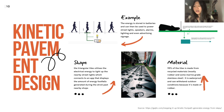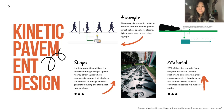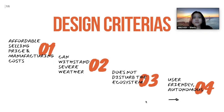Simply put, the tiles have flywheels beneath them that spin when walked on, generating about 8 watts per footstep. They also have generators in every corner of the tiles, allowing them to produce energy across every part of the sheet. We incorporated four design criteria: affordable selling price and manufacturing cost; ability to withstand severe weather; does not disturb the ecosystem; and user-friendly.